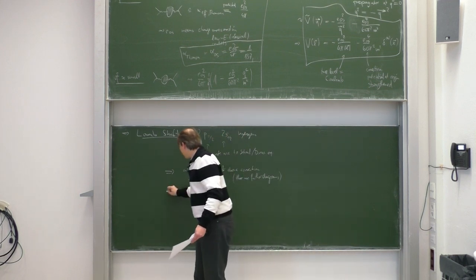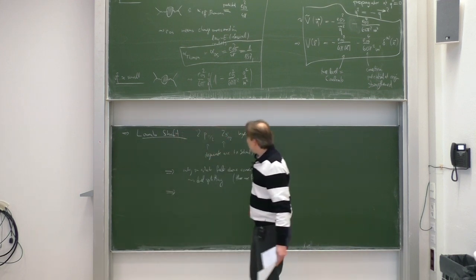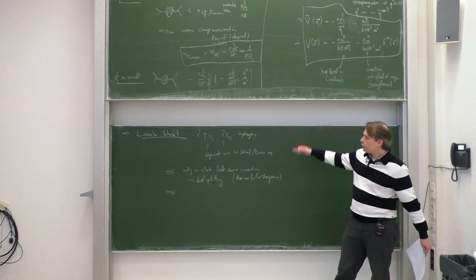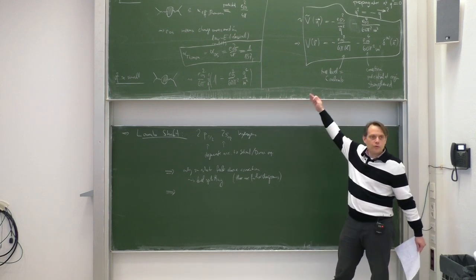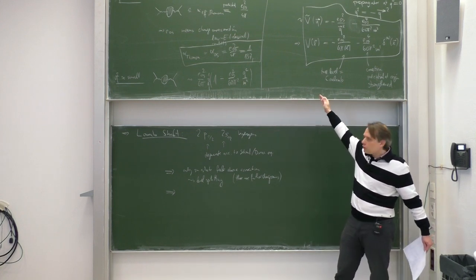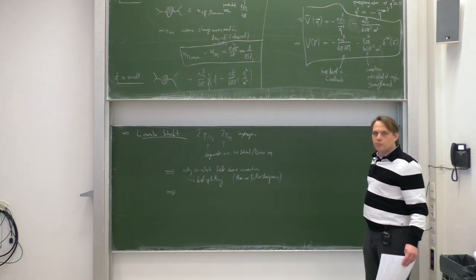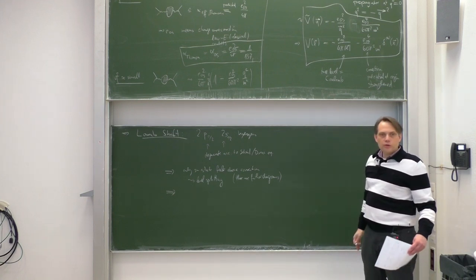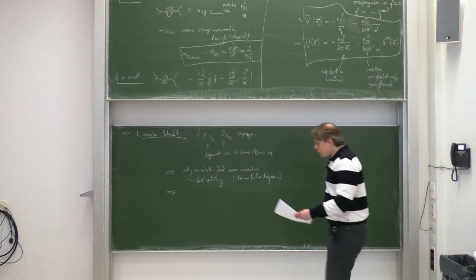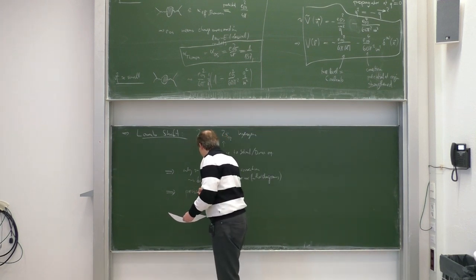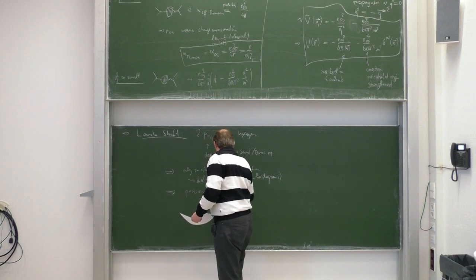We have calculated just one Feynman diagram, which shows that a level splitting will occur. But to quantitatively evaluate the splitting, all Feynman diagrams are needed — other diagrams contribute as well, so the number from this diagram alone is not complete. The Lamb shift is extremely famous — one of the first applications of QED loop calculations and still one of the most accurate tests of QED.